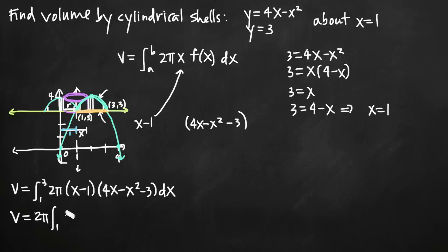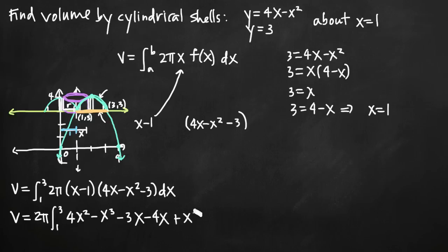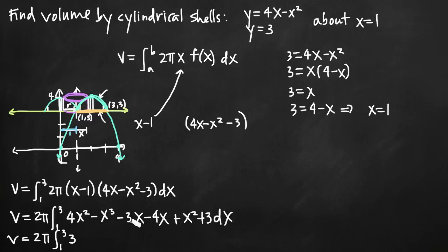Now we simplify and evaluate the integral. We pull 2pi out front as a constant, then multiply (x minus 1) times (4x minus x squared minus 3) to get 4x squared minus x cubed minus 3x minus 4x plus x squared plus 3. Combining like terms, we get the integral from 1 to 3 of (3 minus 7x plus 5x squared minus x cubed) dx.